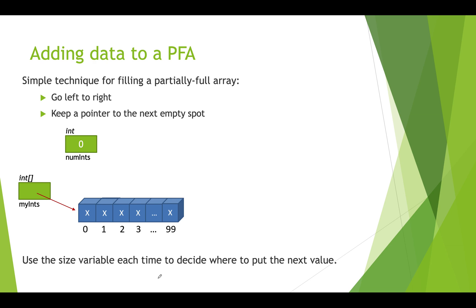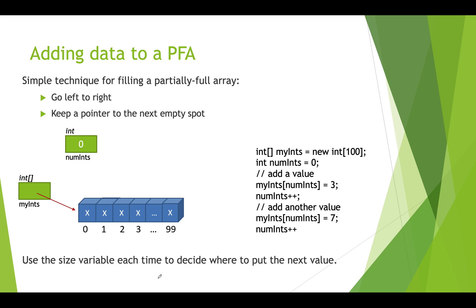Now let's look at how to add data to a partially filled array. The basic technique is to go left to right, keeping a pointer to the next empty slot — which is just our int variable. Here we have int array 'myInts' with 100 slots, and we set 'numInts' to zero because we haven't added any real values yet. We have 100 slots (indices 0 to 99) and the counter numInts is zero.